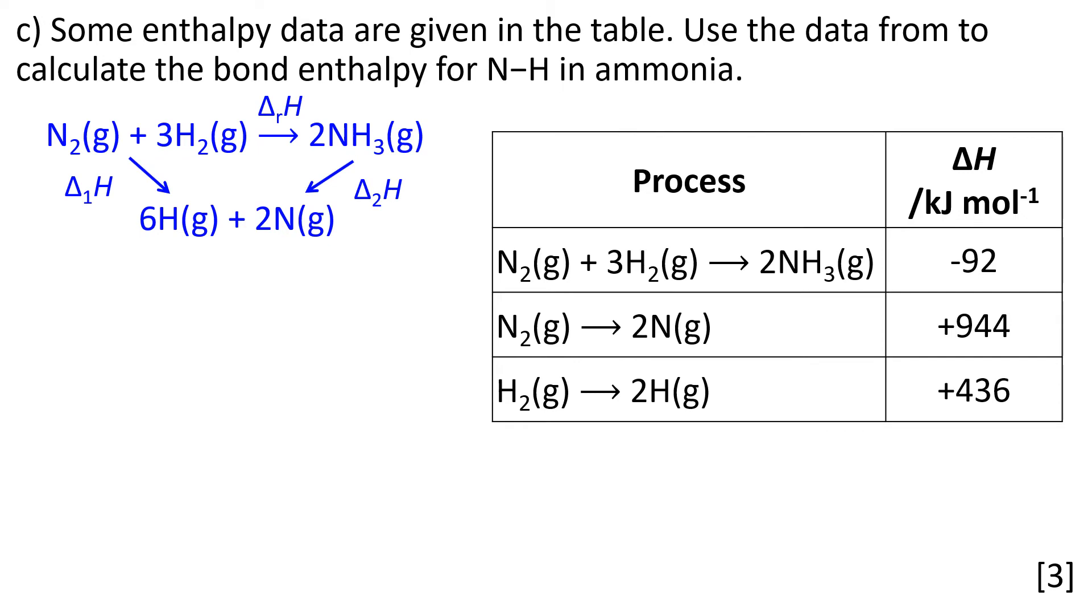We get an idea of how many of each type of bond is being broken. That's especially useful if you're just starting off. ΔᵣH is given to us in the question, that's just the top process. Δ₁H and Δ₂H are a combination of these nitrogen, hydrogen, and N-H bonds. -92 is our ΔᵣH.